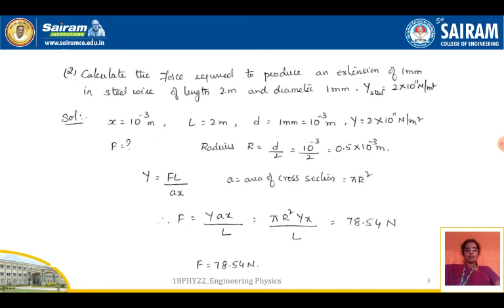Next, we will go with another problem: Calculate the force required to produce an extension of 1 mm in a steel wire of length 2 meters and diameter 1 mm. Young's modulus of steel Y = 2 × 10¹¹ Newton per meter square. The extension X = 1 mm, converting to meters gives X = 10⁻³ meters.